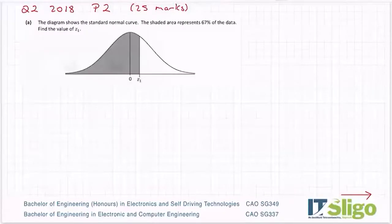Question 2, 2018, one of the shorter questions, the 25 marker. The diagram shows the standard normal curve. The shaded area represents 67% of the data. Find the value of Z1.